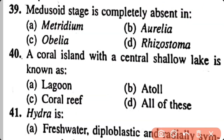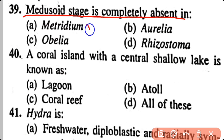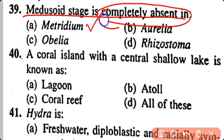Question 39. Medusoid stage is completely absent in: Metridium, Aurelia, Obelia, Rhizostoma. Option A. Medusoid stage is completely absent in Metridium, which belongs to class Anthozoa and is a sea anemone.